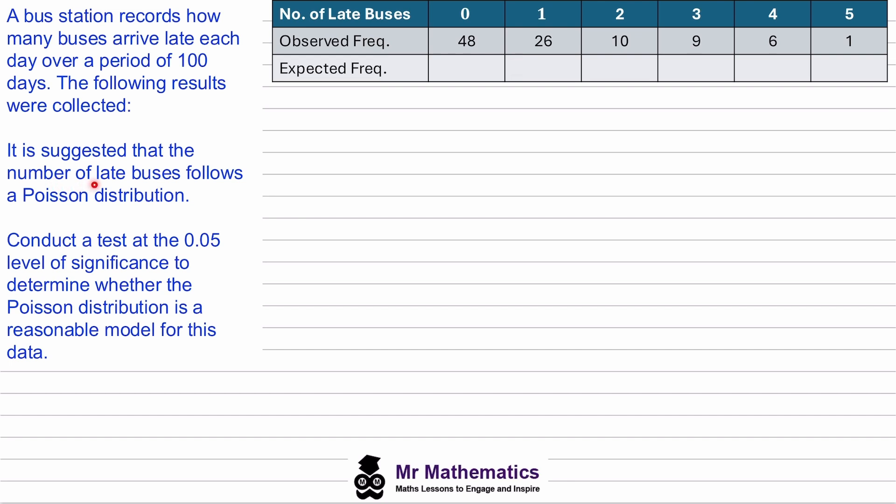It is suggested that the number of late buses follows a Poisson distribution. We've been asked to conduct a test at the 5% level of significance to determine whether the Poisson distribution is a reasonable model for this data.